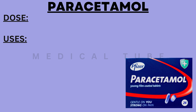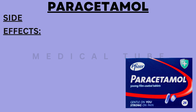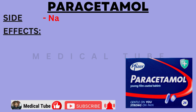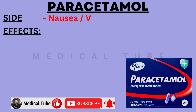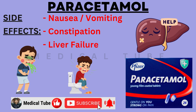First of all is Paracetamol. The dose of Paracetamol is 500 mg or 650 mg. It is used to control fever and body pains. The side effects of Paracetamol are nausea and vomiting, constipation and liver failure.